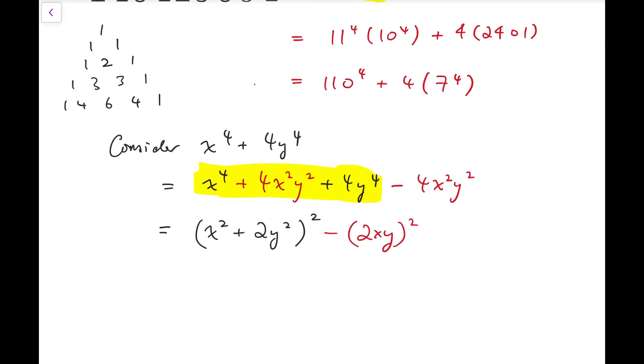Now, it is, in fact, difference of squares, so it can be written as x squared plus 2y squared plus 2xy all multiplied by x squared plus 2y squared minus 2xy.